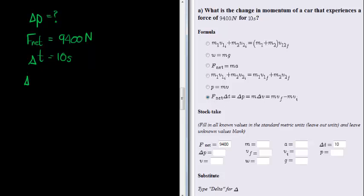So, change in momentum, let's go wild to pink. Change in momentum is equal to the net force times the change in time. And this gives me 9400 times 10, and that's quite easy.